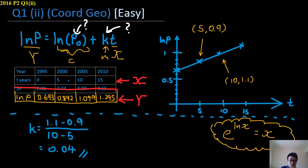So here you can see 1.1 minus 0.9 and 10 minus 5. And so you get a k. Don't worry if it's not exactly the same. There's still room for precision.